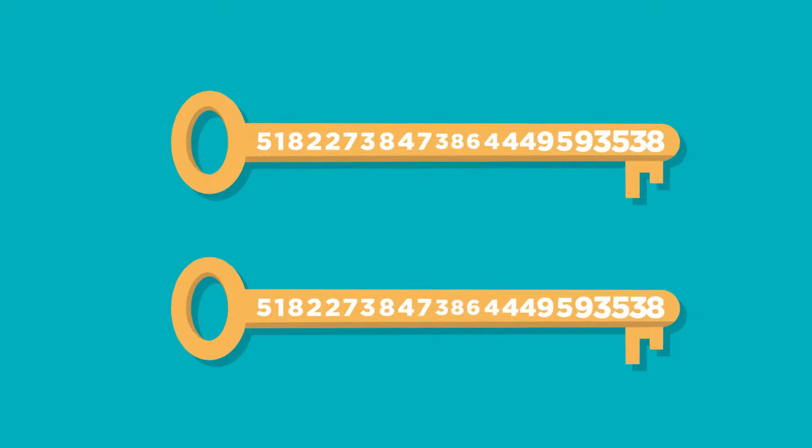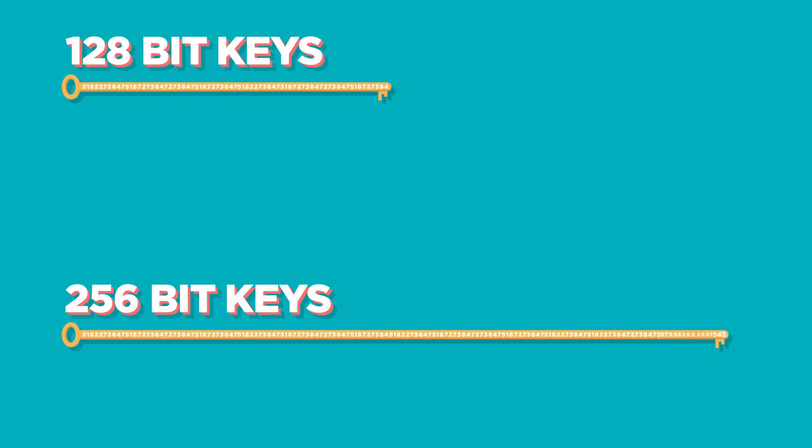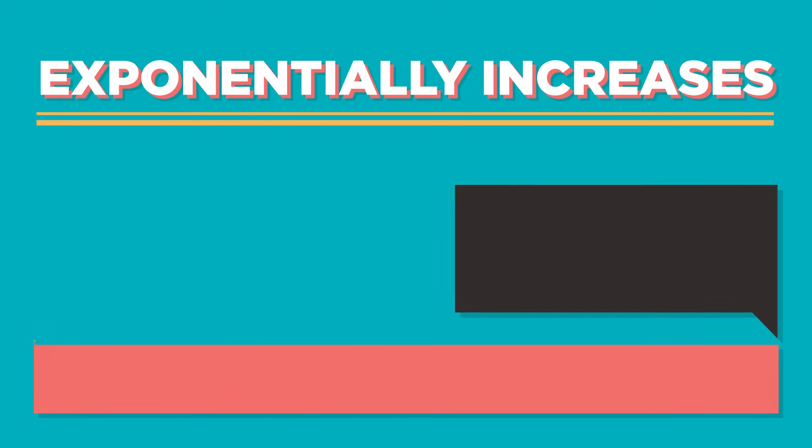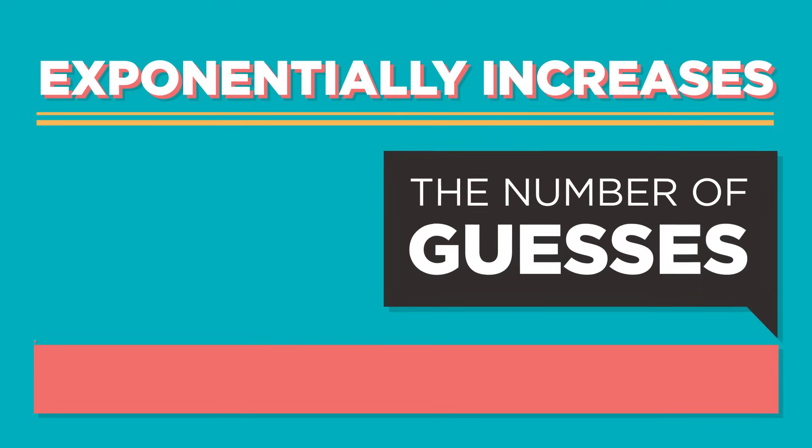Of course, computer chips get twice as fast and half the size every year or so. If that pace of exponential progress continues, today's impossible problems will be solvable just a few hundred years in the future, and 256-bits won't be enough to be safe. In fact, we've already had to increase the standard key length to keep up with the speed of computers. The good news is, using a longer key doesn't make encrypting messages much harder, but it exponentially increases the number of guesses that it would take to crack a cipher.